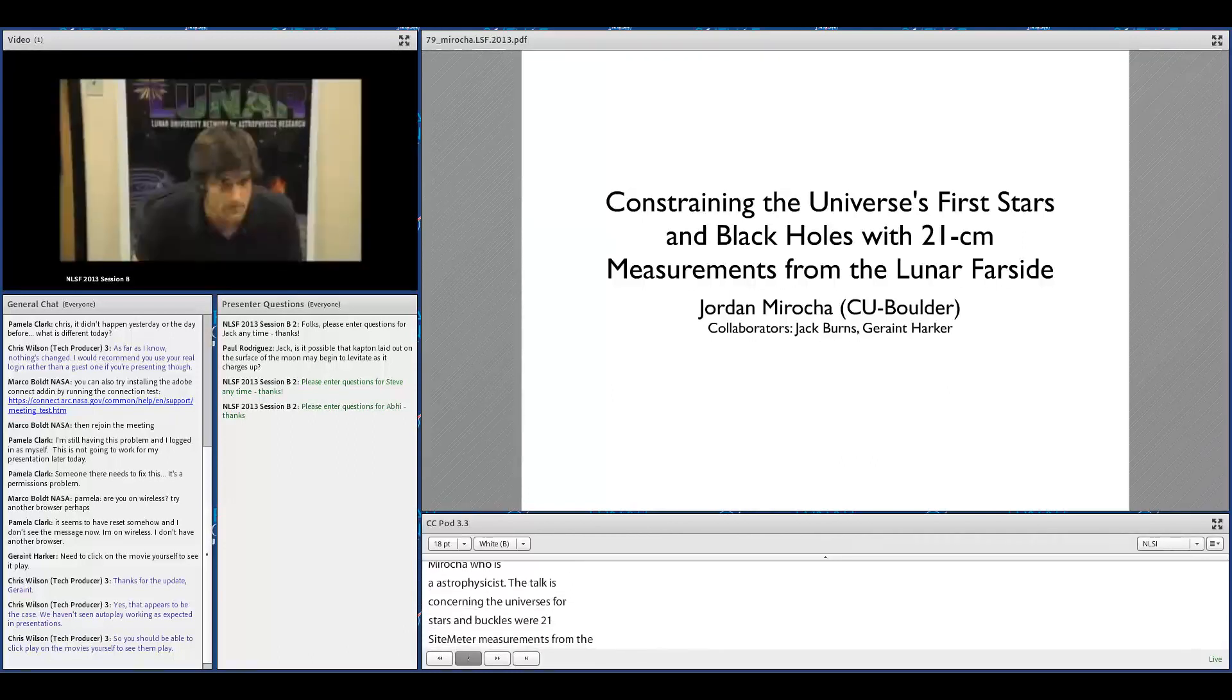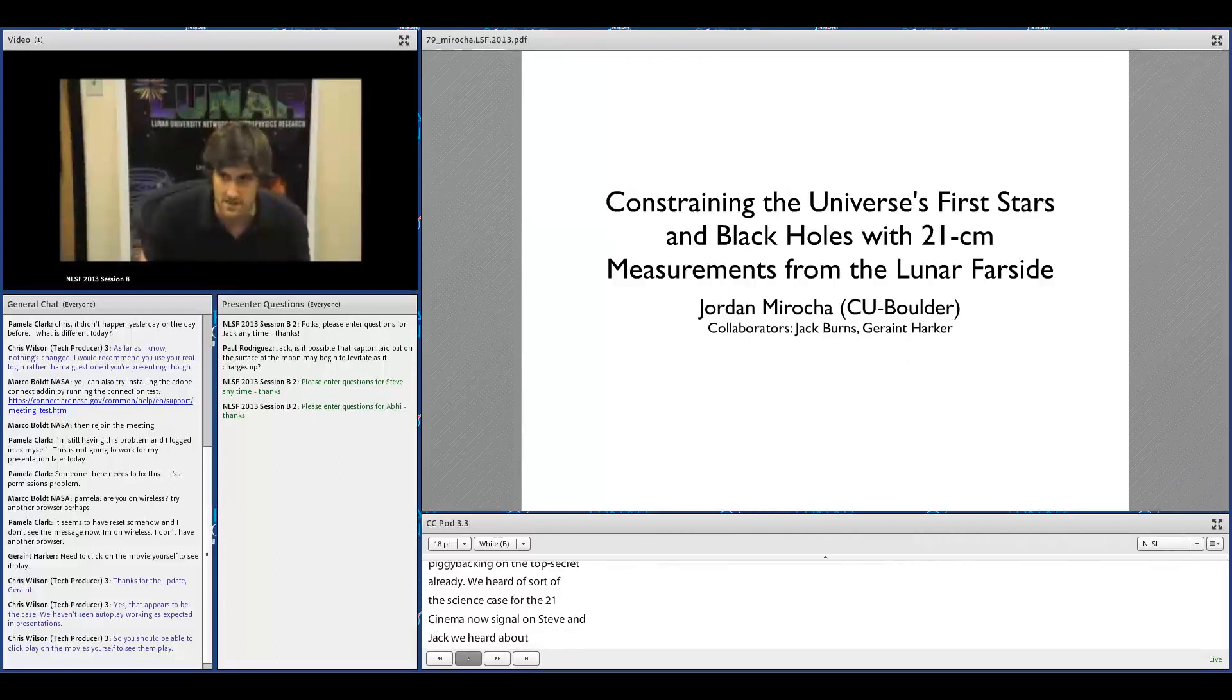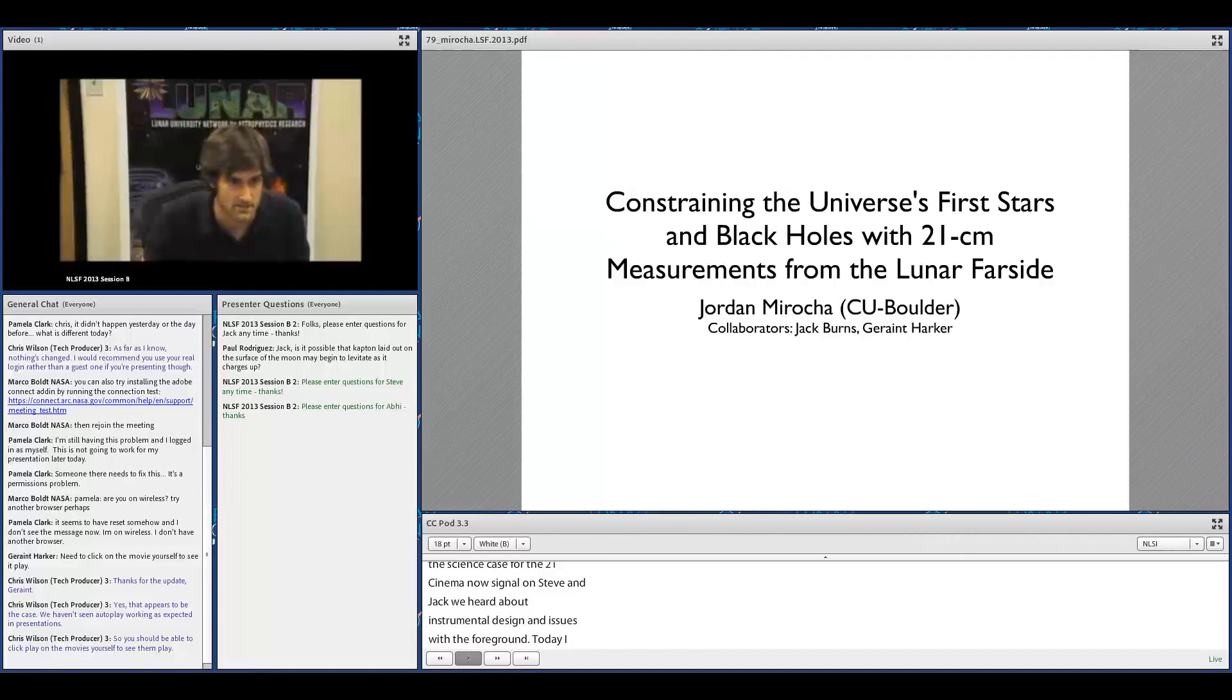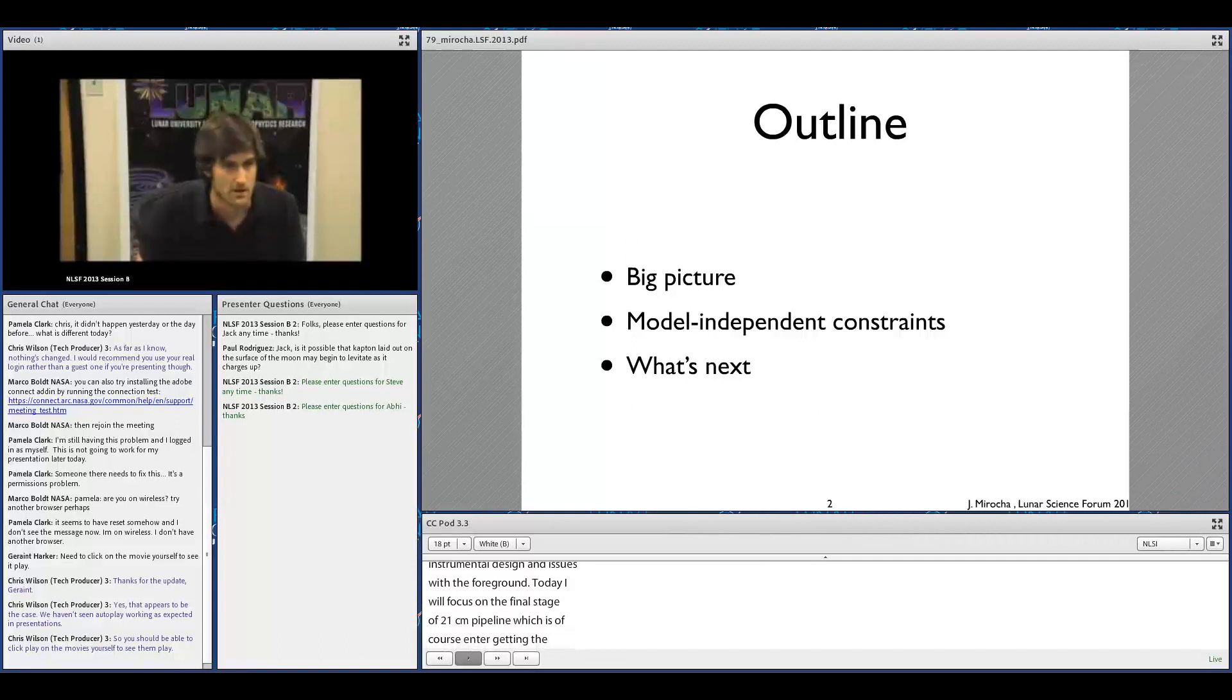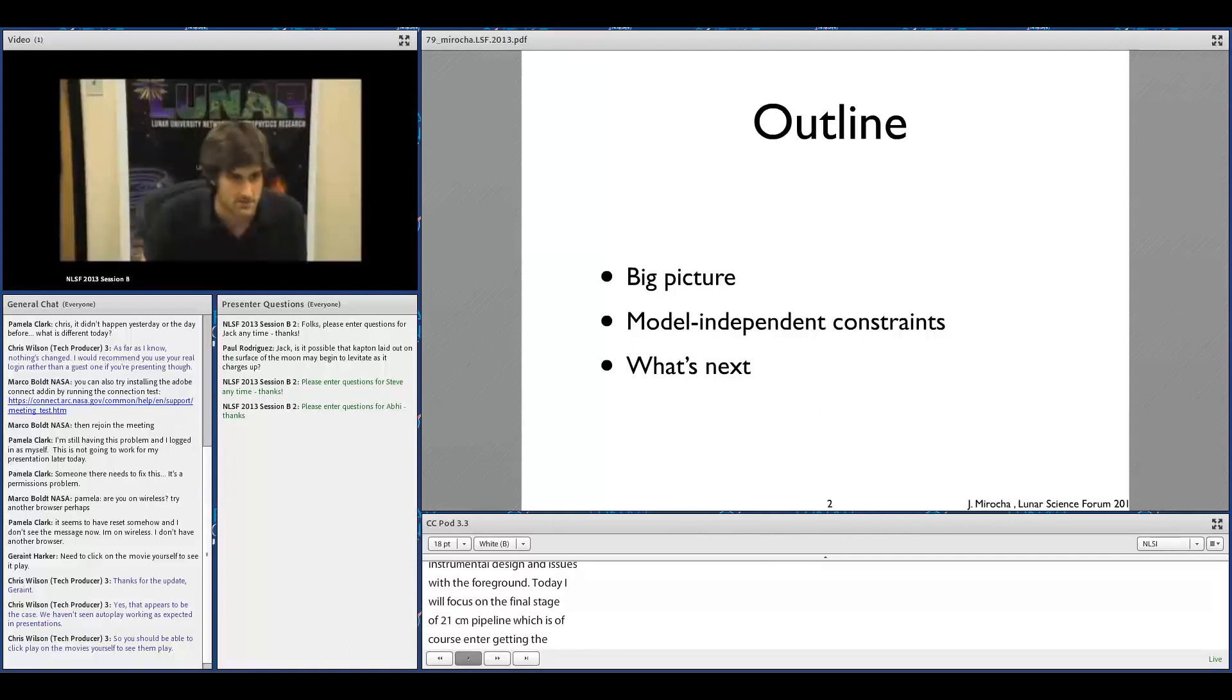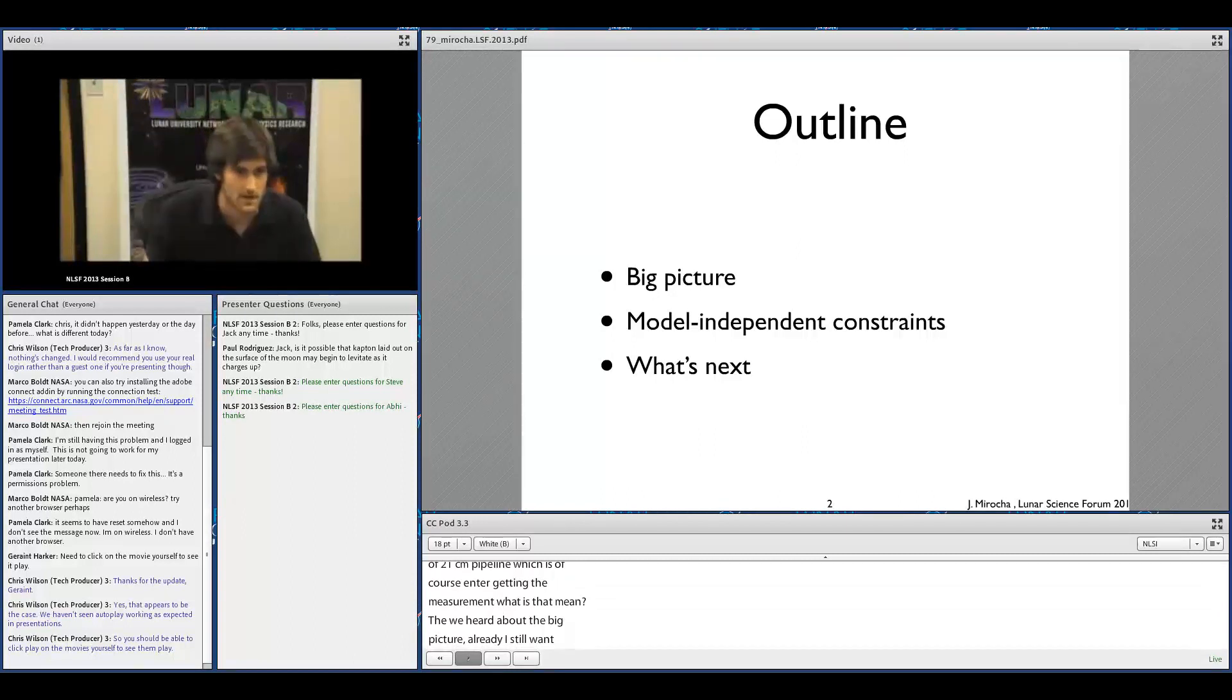Alright, thank you. Well, I'm looking forward to piggybacking on all the talks we've heard already. We've heard about the science case for the 21-centimeter signal from Steve and Jack, and about instrumental design and issues with the foregrounds. Today I'm going to focus on the final stage of any 21-centimeter pipeline, which is interpreting the measurement. What does it mean?